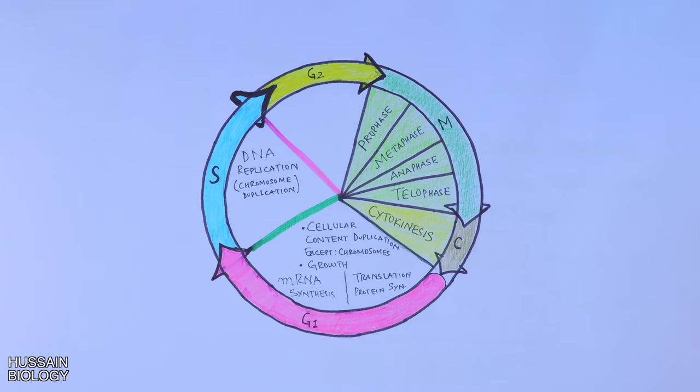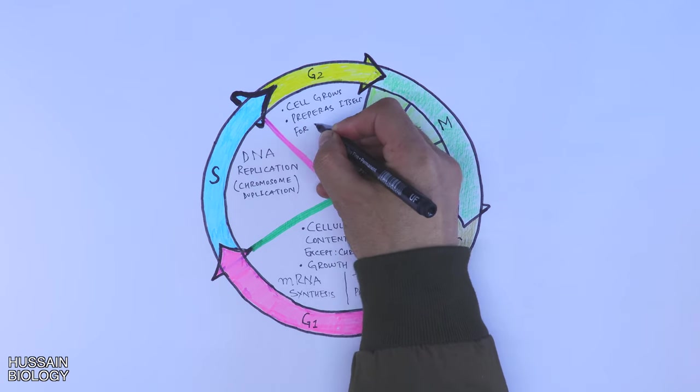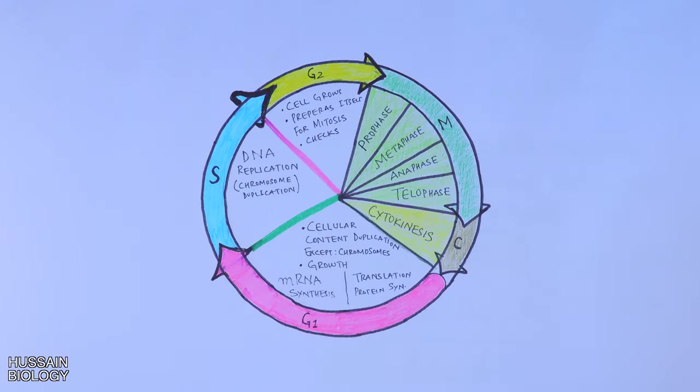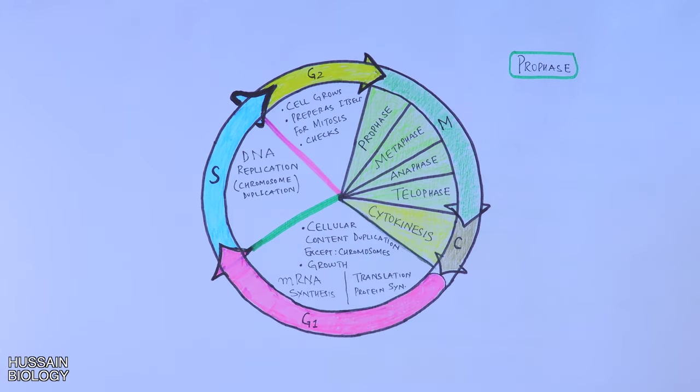In G2 phase, the cell rapidly grows again, prepares itself for mitosis, and also there are quality control checks. From here the cell sneaks into the M phase, where first of all we get prophase, where chromatin condenses into chromosomes and the nucleolus disappears.